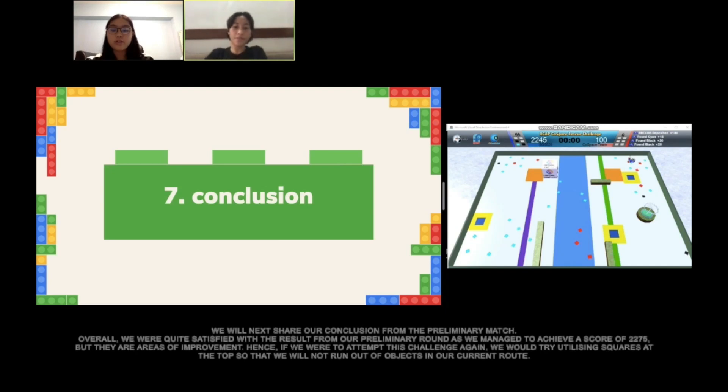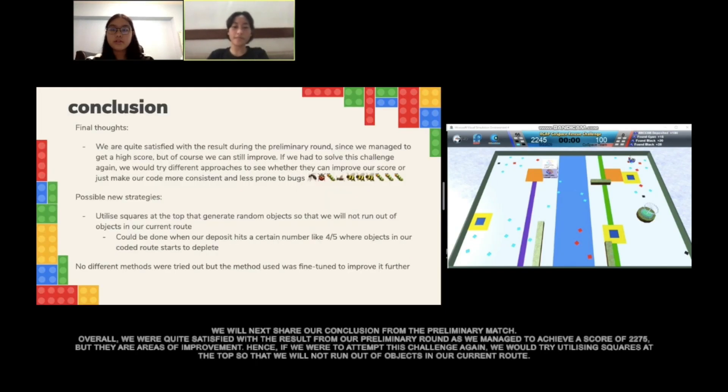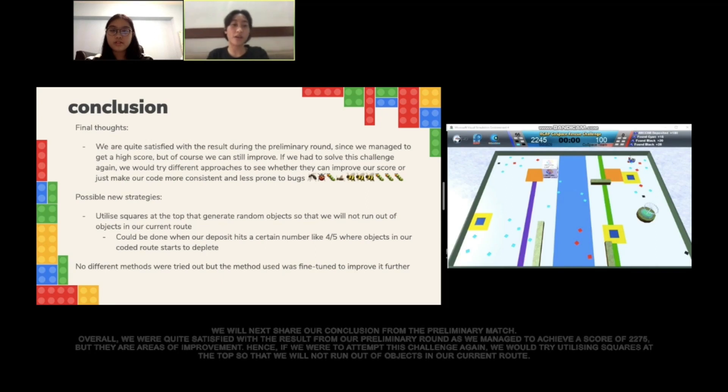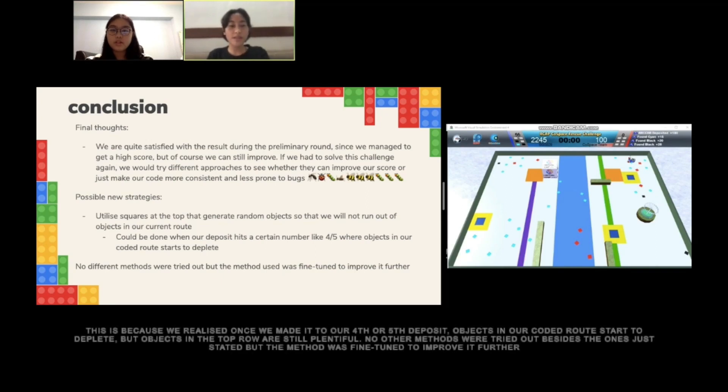We will now share our conclusion from the preliminary match. Overall, we were quite satisfied with the result from our preliminary round as we managed to achieve a score of 2,275. But there are areas of improvement. Hence, if we were to attempt this challenge again, we would try utilizing the squares at the top so that we would not run out of objects in our current route. This is because we realized once we made it to the top, objects in our current route are going to deplete, but objects in the top row are sufficient. No other methods were tried out besides the ones stated, but the methods were refined to improve performance.